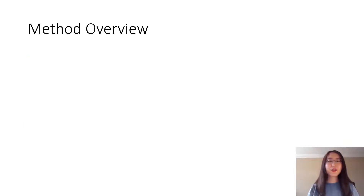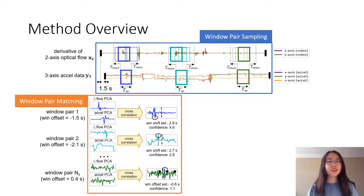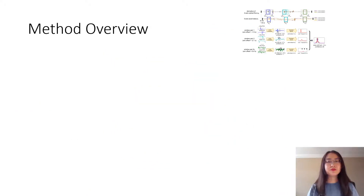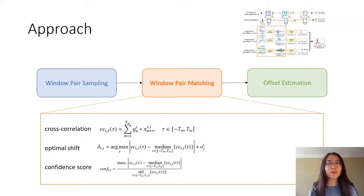Our approach to matching noisy video and accelerometry signals captured from mobile devices has three steps: window pair sampling, window pair matching, and offset estimation. The first step selects high-quality window pairs for matching as a way to overcome noise and missingness in data. The second step matches each window pair by calculating their cross-correlation, which gives a local time-shift estimation and the confidence of this estimate. The confidence score captures the fact that not all window pairs are equally informative — intuitively, higher and sharper peaks are associated with more reliable estimates.